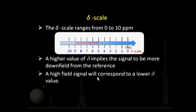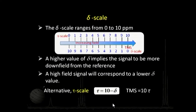Because of this reciprocal relationship — where delta value increases as field decreases — some people found the delta scale odd. To address this, the tau scale was defined as: tau = 10 − delta. When delta is 0, tau becomes 10, and the scale runs in reverse. On the tau scale, a lower value corresponds to low field, giving a more intuitive correspondence. However, the tau scale is not used as often, and the delta scale has become customary.